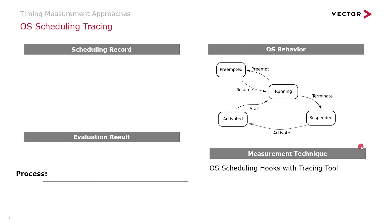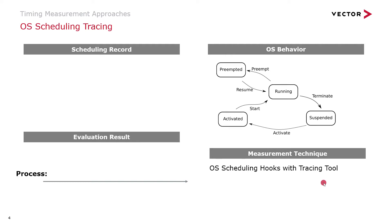I would like to highlight the OS scheduling tracing mechanism, which is quite familiar also in Classic AUTOSAR. On the left-hand side we see a recording of an OS scheduling trace, and on the right-hand side we see the record of events the OS produces. At the bottom left we see the trace events of this OS behavior and the results we can get from that.